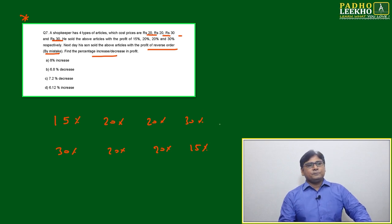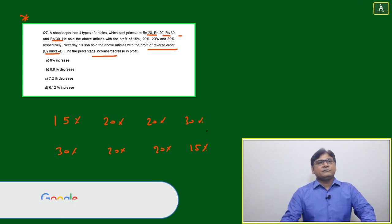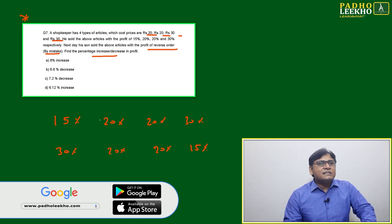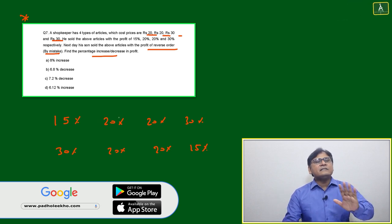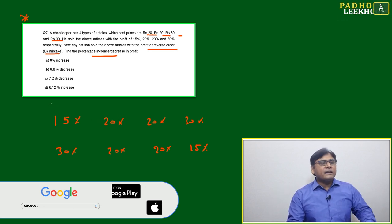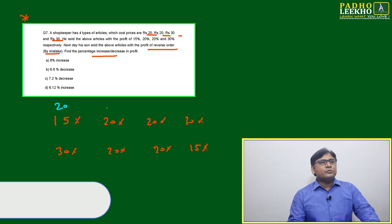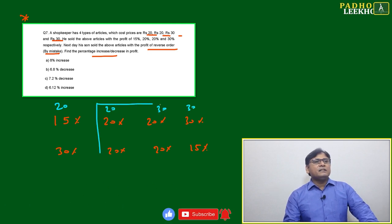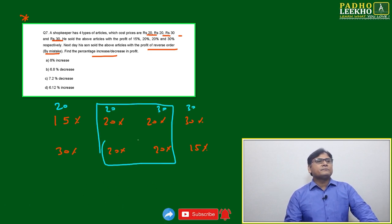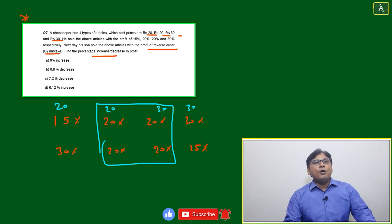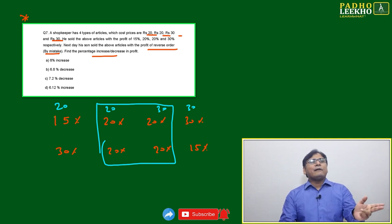The question is: what is the percentage increase or decrease in profit? By seeing it, we can decide if it will increase or decrease. The cost prices are 20, 20, 30, 30. These two middle ones are not going to be affected after reversing the order. Only first and fourth are interchanging.